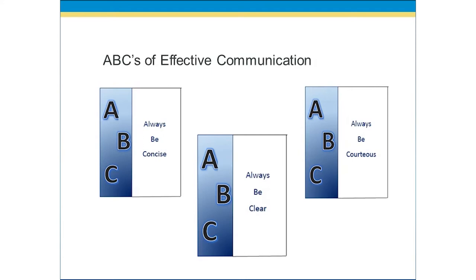The second ABC is: always be clear. Get to the point. Other than maybe a courteous introduction, you want to get to the heart of your message directly. If you can't describe what you need in two or three sentences, then you may want to go back and examine if you really know what you want before you communicate. The final ABC of effective communication is: always be courteous. Good manners are always important. Treating people politely shows respect, and it helps to ensure that others are receptive to your message. Please, thank you, and excuse me are the most powerful phrases in both spoken and written messages.